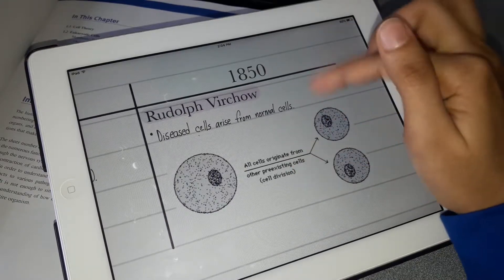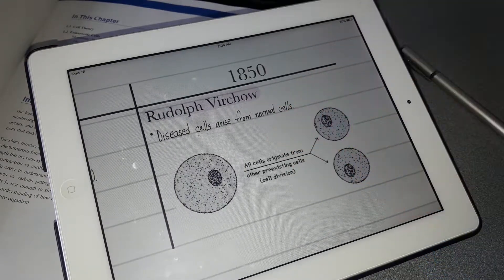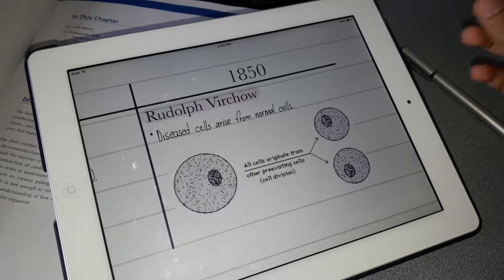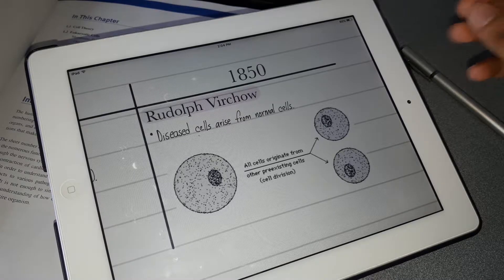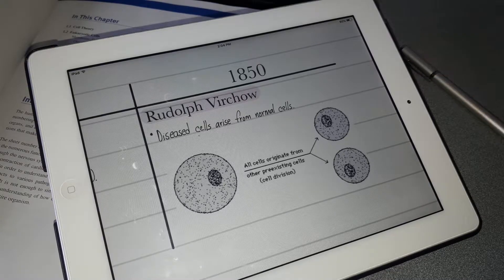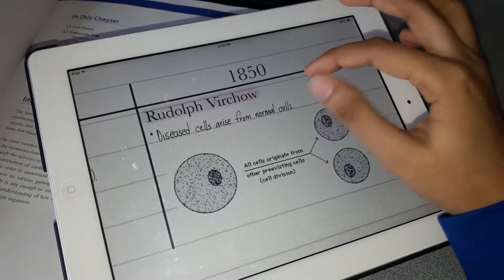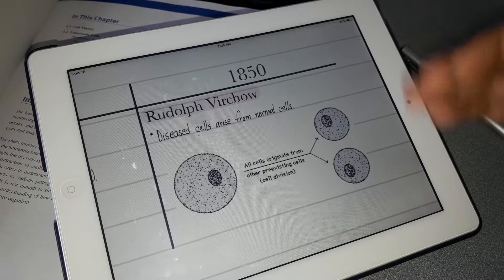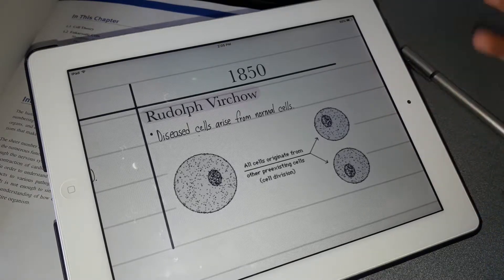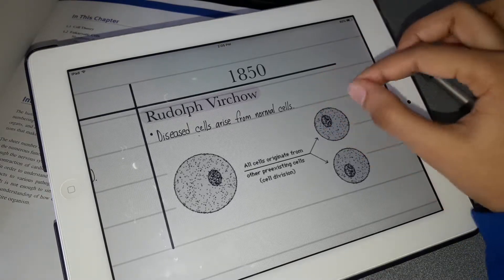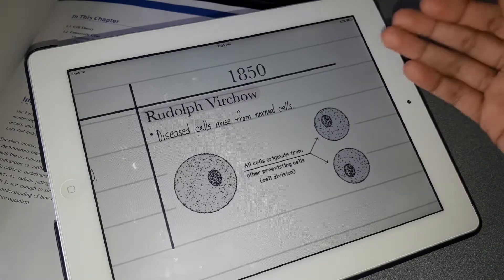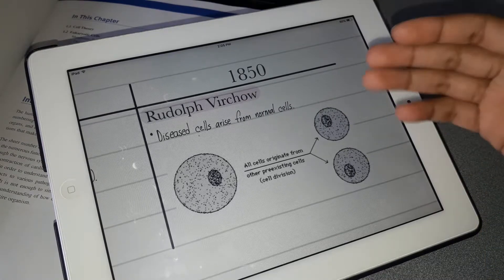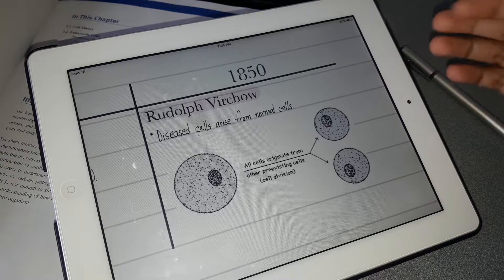In 1850, Rudolf Virchow discovered that cells actually come from pre-existing cells. Another discovery he made was that diseased cells arise from normal cells. This actually contradicts his theory - which we'll learn in a later chapter - that viruses are not considered living organisms.